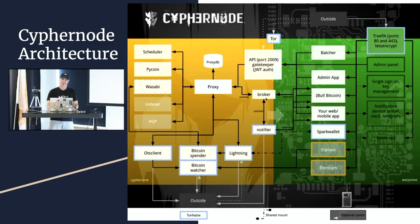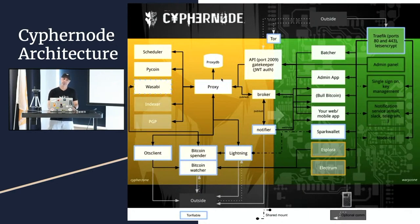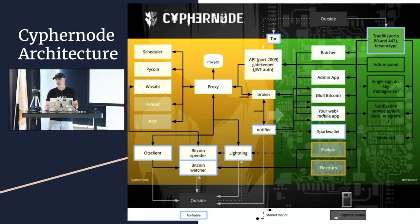There's a broker because we use a publisher-subscriber pattern inside Cyphernode. Any component in the ecosystem can publish a message on a topic, and any subscriber to that topic is going to receive the message. For example, if you are a developer of a wallet, you deploy your wallet in the Cyphernode app zone and subscribe to the topic of transaction confirmations. When the proxy receives confirmations on watched addresses or transactions, it publishes a message on that topic, and your wallet receives it to update the display for your users.